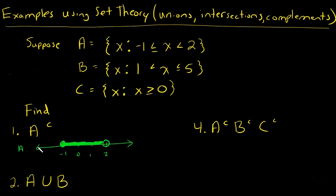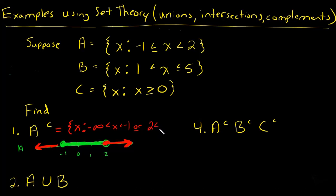So the complement of A will be all numbers below negative 1, including 2 since 2 was not included in A, and all numbers above 2. The solution is: X such that X is from negative infinity to negative 1 (not including negative 1), or from 2 to positive infinity (including 2). Simplified: X is less than negative 1, or X is greater than or equal to 2.